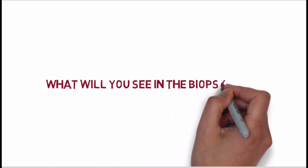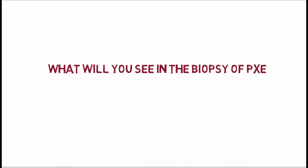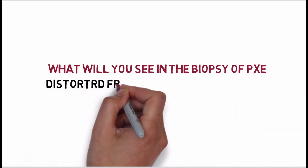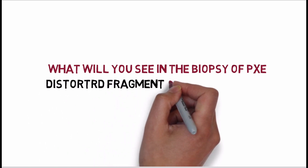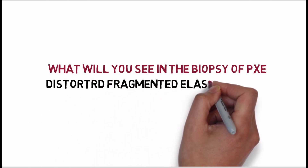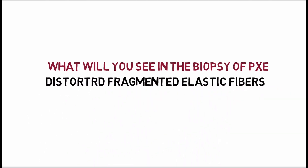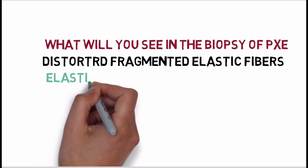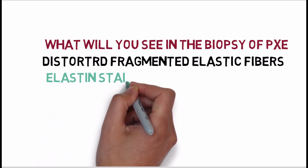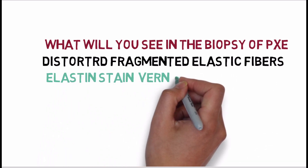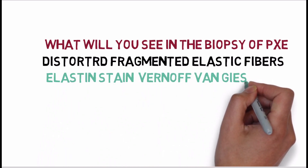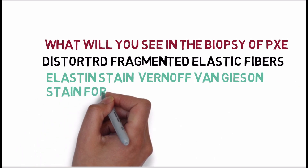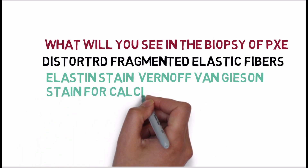What will you see in the biopsy of pseudoxanthoma elasticum? Since it is a disorder of elastic fibers, you will see distorted and fragmented elastic fibers in the mid and deep dermis. Sometimes a stain for elastin — called Verhoff van Gieson stain — and a stain for calcium — called von Kossa stain — may be necessary to make the diagnosis.